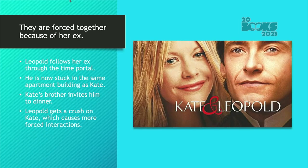In Kate and Leopold, they are forced together because of her ex. Leopold follows her ex through the time portal, he's now stuck in the same apartment building as Kate, and Kate's brother invites him to dinner. All of these things create interaction, and then Leopold starts to get a crush on Kate, which causes more interactions between the two of them.